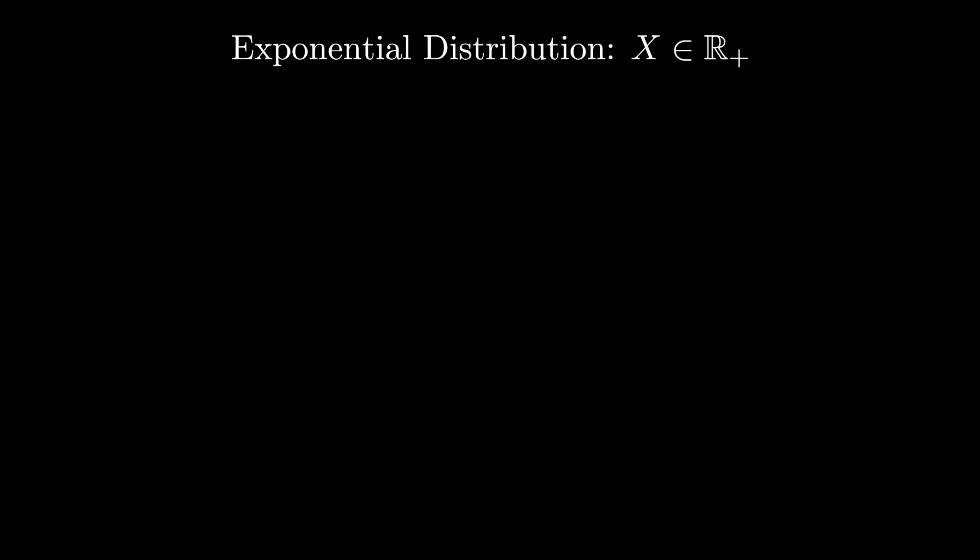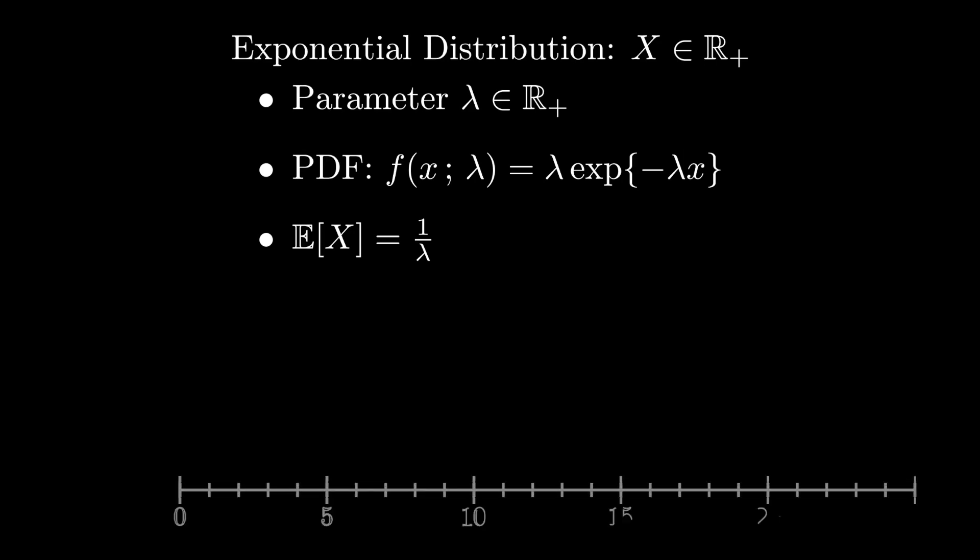Another important class of distributions have support only for positive real numbers. Like the Gaussian and the Poisson, the exponential distribution comes up in a wide variety of natural phenomena. Most notably, the inter-arrival times of memoryless processes are exponentially distributed. The exponential distribution has one parameter, typically denoted lambda, referred to as the rate parameter.